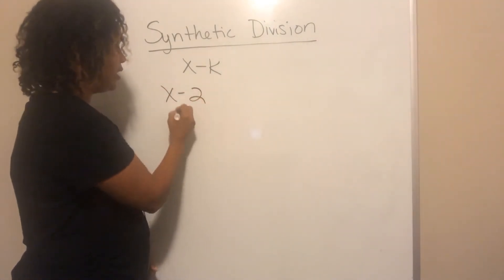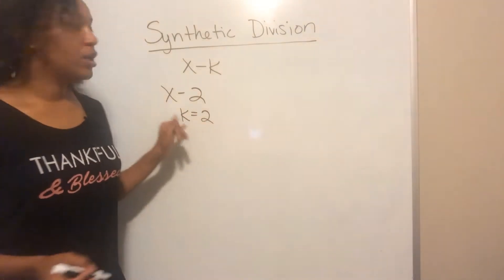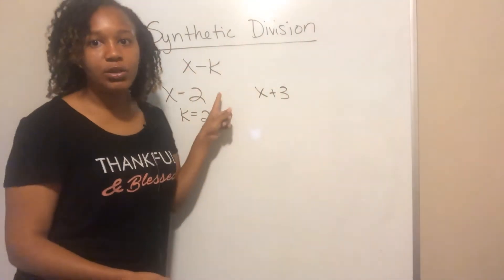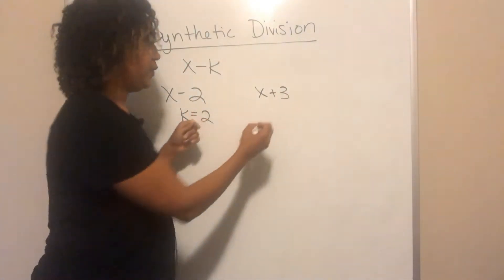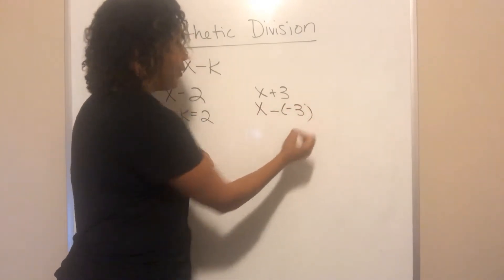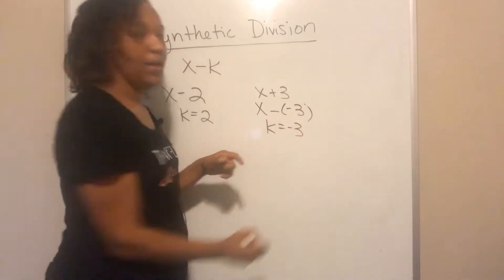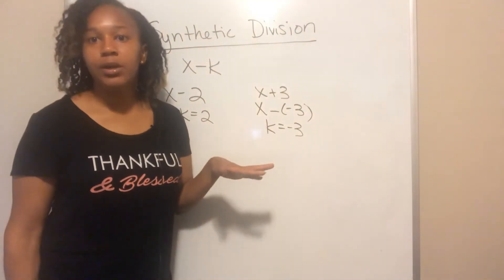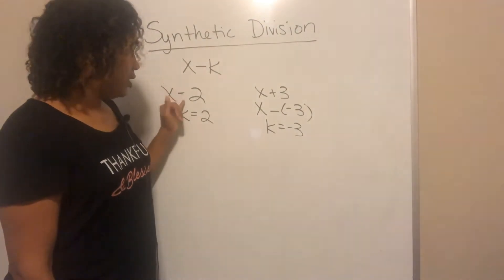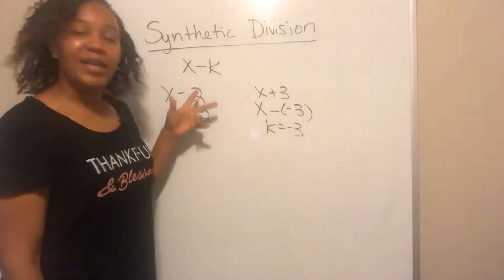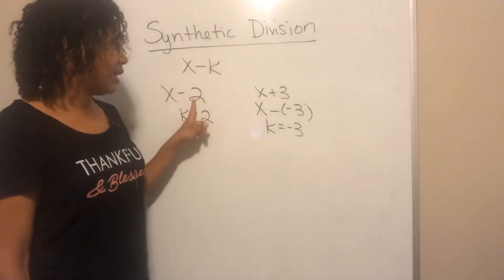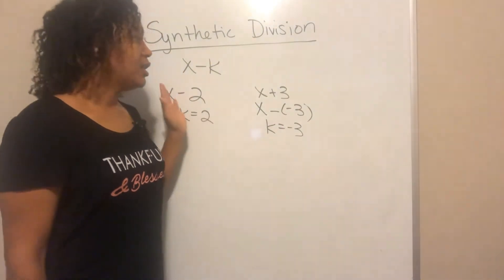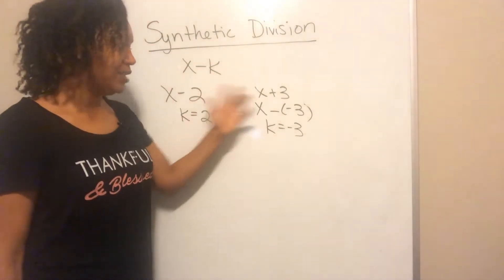It could be plus or minus. So if it was x minus 2, your k is equal to 2. But if it was x plus 3, you can rewrite it as x minus negative 3, so your k would be negative 3. If you're dividing by x minus a number or x plus a number, you can use synthetic division. The k is always the opposite sign of what's written.